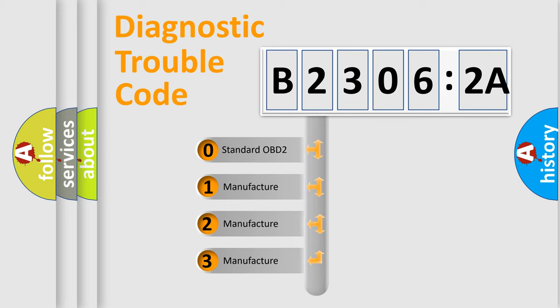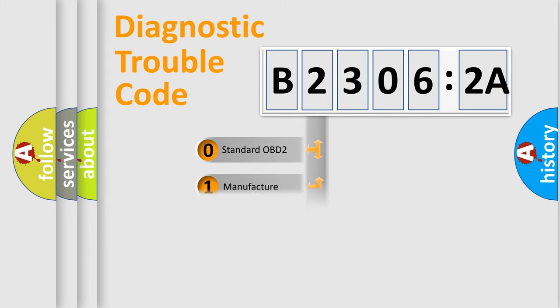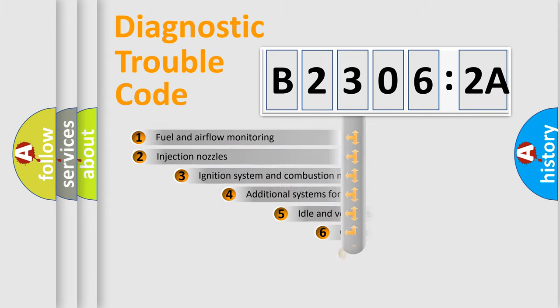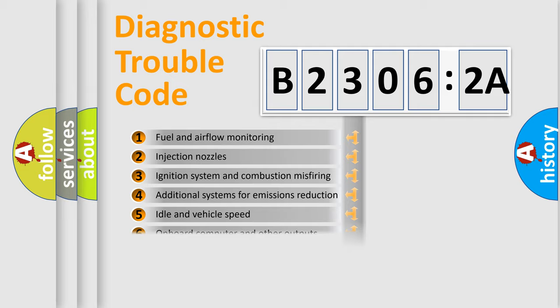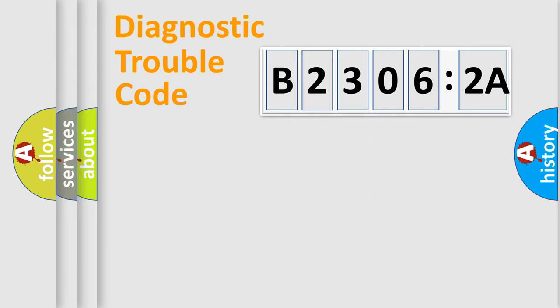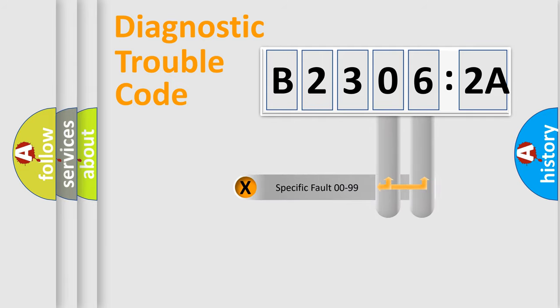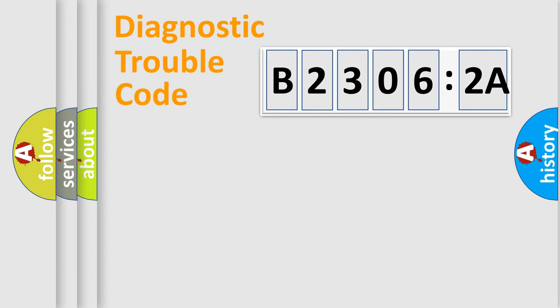If the second character is expressed as zero, it is a standardized error. In the case of numbers 1, 2, or 3, it is a more specific expression of a car-specific error. The third character specifies a subset of errors. This distribution is valid only for the standardized DTC code. Only the last two characters define the specific fault of the group.